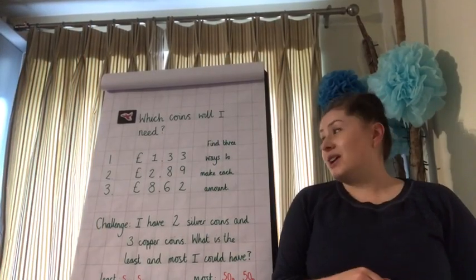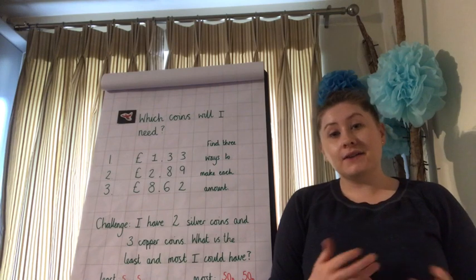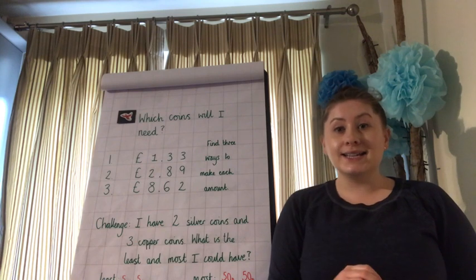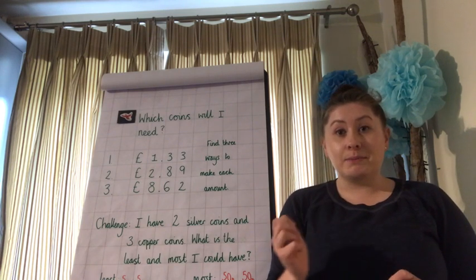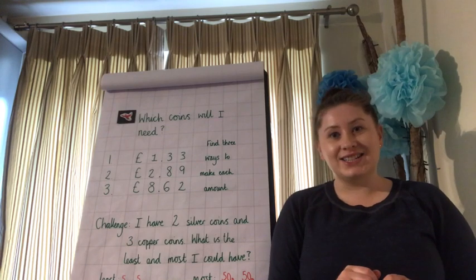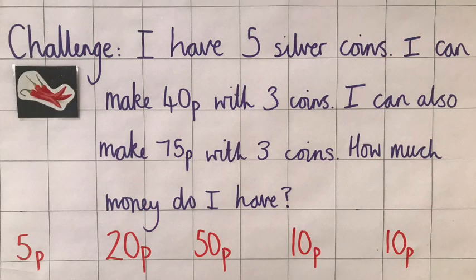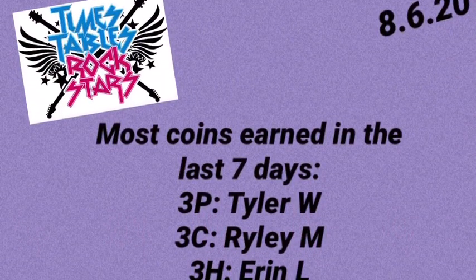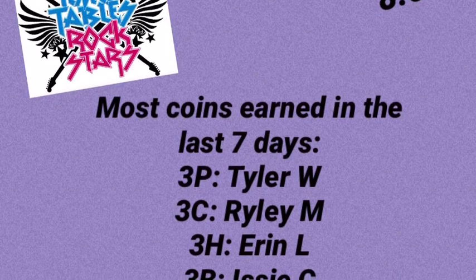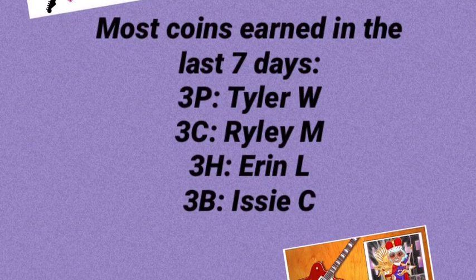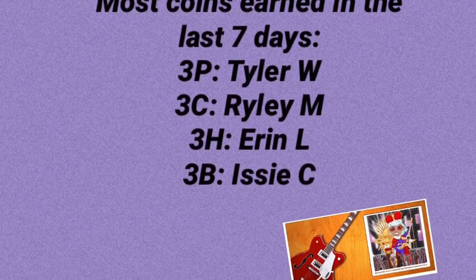How did you get on? It's difficult to mark these because I've asked you to find different ways and different coins to make your amounts. So I'm going to ask you to speak to your grown-up in the house and ask them to give it a quick mark for you. In a minute, we'll have a look at our challenges to see how you got on. A massive well done to everybody who's had a go at TT Rockstars and MyMaths. The children who have had the most coins this week go to Tyler, Riley, Erin and Izzy. Keep up the great job, everyone.